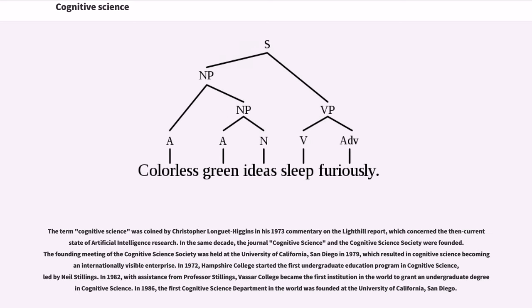The term cognitive science was coined by Christopher Longuet-Higgins in his 1973 commentary on the Lighthill Report, which concerned the then-current state of artificial intelligence research. In the same decade, the journal Cognitive Science and the Cognitive Science Society were founded. The founding meeting of the Cognitive Science Society was held at the University of California, San Diego in 1979, which resulted in cognitive science becoming an internationally visible enterprise. In 1972, Hampshire College started the first undergraduate education program in cognitive science, led by Neil Stillings. In 1982, with assistance from Professor Stillings, Vassar College became the first institution in the world to grant an undergraduate degree in cognitive science. In 1986, the first cognitive science department in the world was founded at the University of California, San Diego.